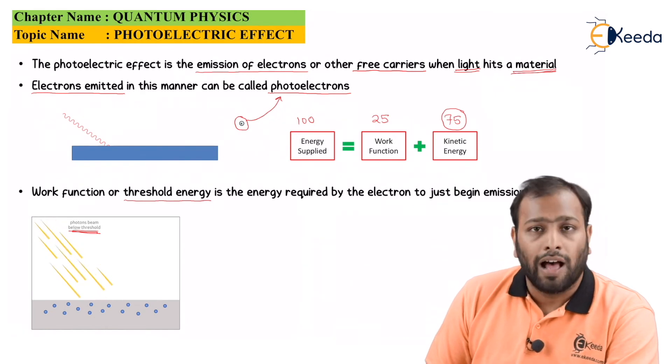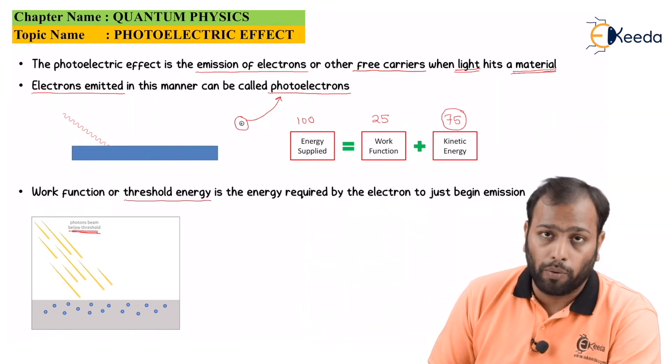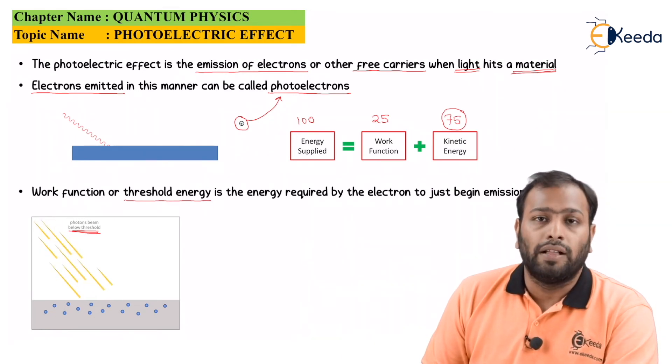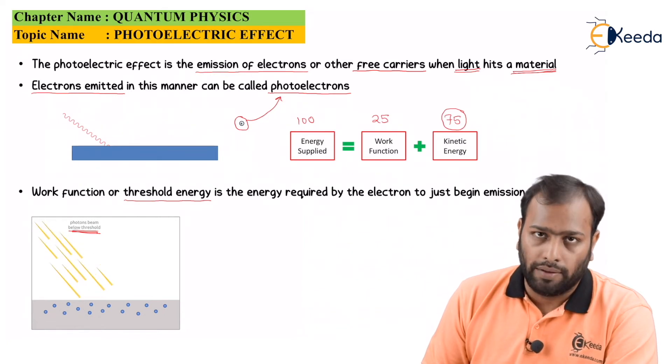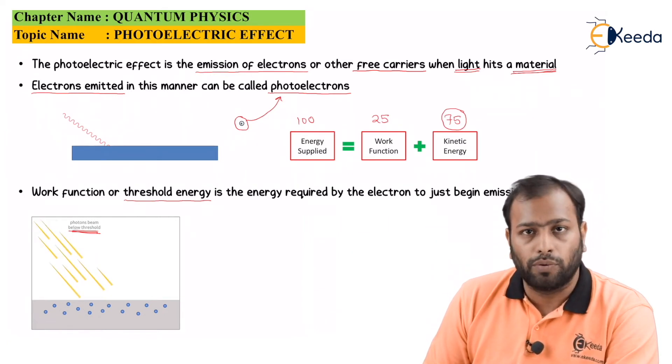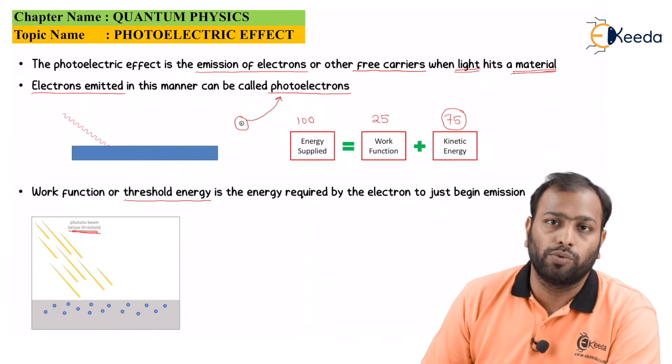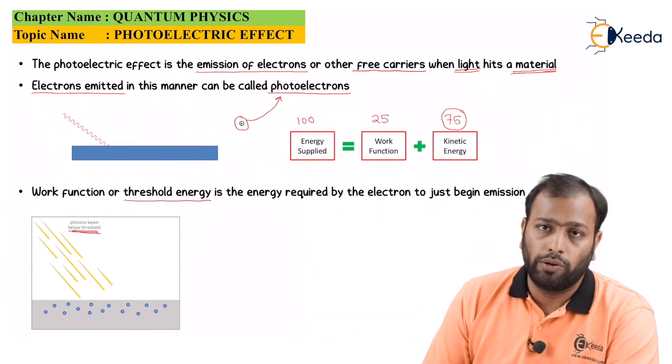So again, question could arise: how much is the minimum energy that you need to provide for photo emission to begin? Well, this is the threshold level. If you provide energy just equal to the threshold level, your emission is just going to begin. This is the point you need to remember while solving the numericals.